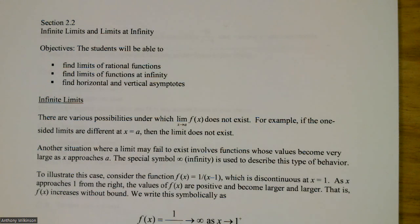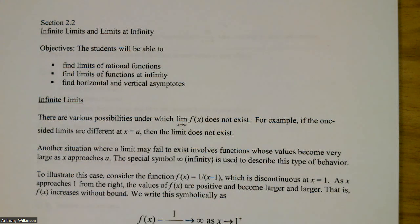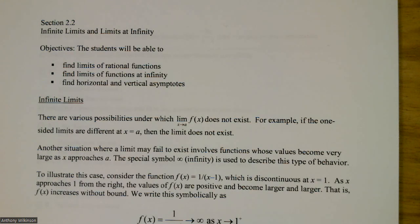In this video, we're going to talk about Section 2.2, dealing with limits — infinite limits and limits at infinity. We'll continue our discussion on limits. In this video, we're going to find limits of rational functions, find limits of functions at infinity, and find horizontal and vertical asymptotes. First, we'll talk about infinite limits.